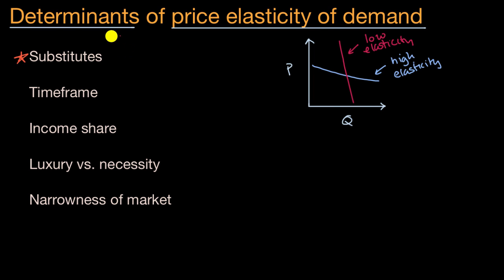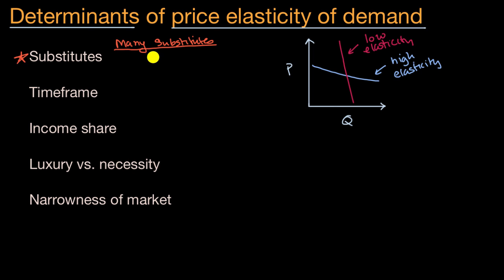Let's start with substitutes. Imagine a world where there are many substitutes for the good or service. Let's say it's the market for Fuji apples — the substitutes are other types of apples like Macintosh and Red Delicious. For a given percent change in price, would the percent change in quantity demanded of Fuji apples change dramatically? If only Fuji apples get more expensive, people will go to the substitutes. So when you have many substitutes, that tends to lead to more elasticity.